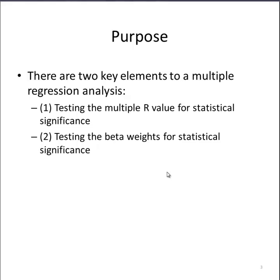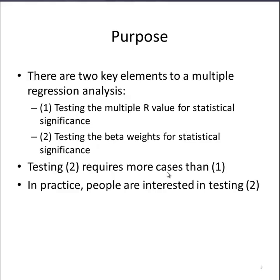The other element and key purpose of conducting a multiple regression analysis is to examine and test the beta weights for statistical significance. Those are beta weights associated with each of the independent variables. Testing two requires more cases than one. If you are interested in the beta weights, you will require a larger sample size than if your interest is restricted to testing the multiple R for statistical significance.